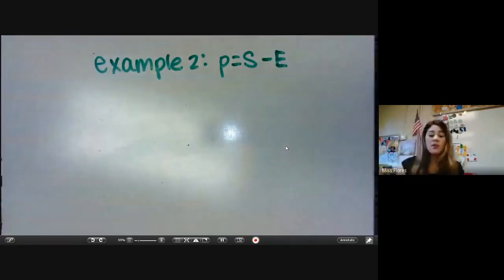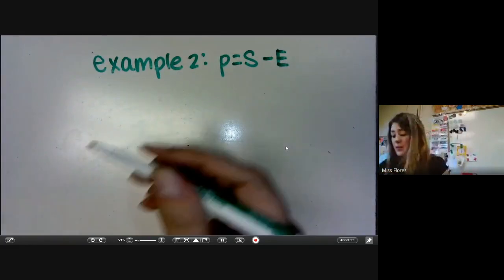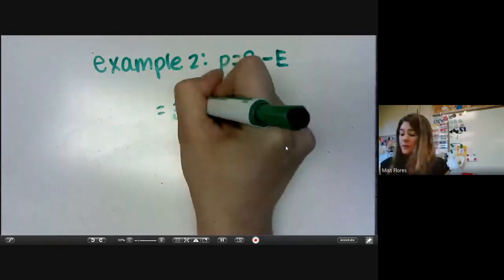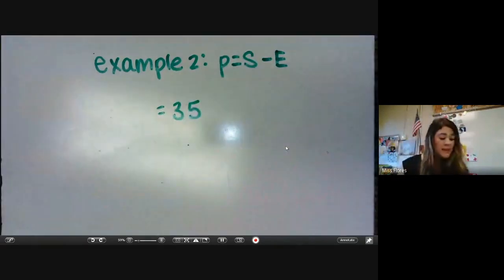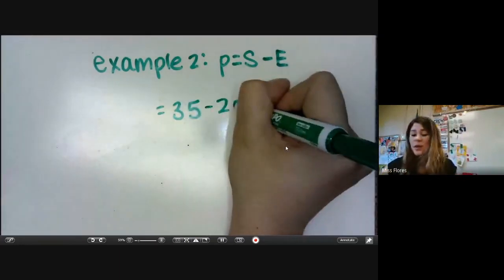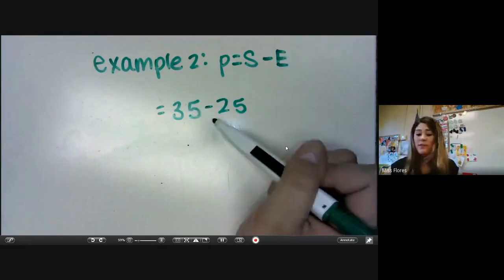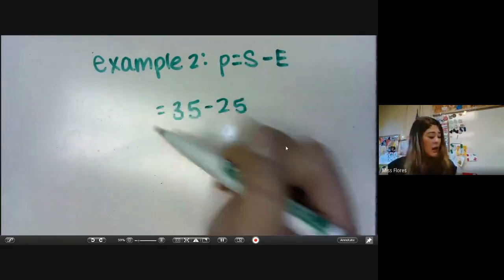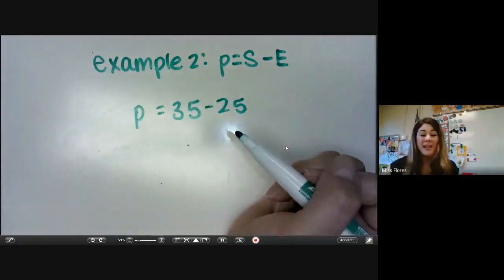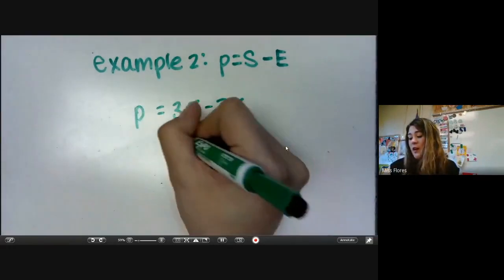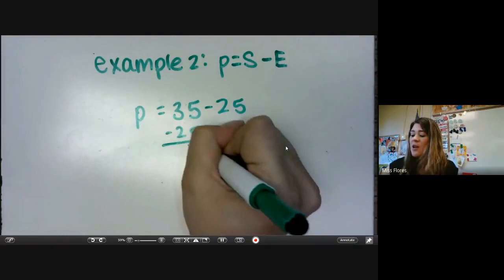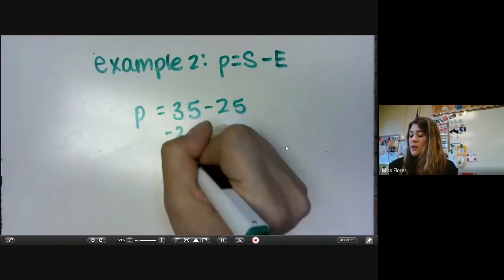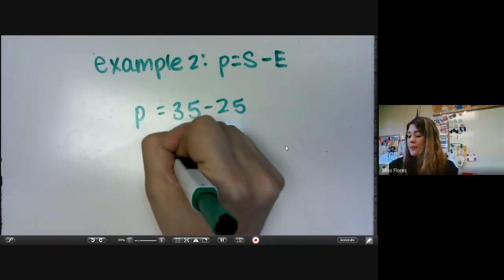So the equation is profit equals sales minus expenses, meaning sales is how many she sold, which it tells us she sold for $35. Then it says the expenses. That's how much she spent, and it says she spent $25. So we would subtract $25 from $35, and then we would get our profit. How much she made. So 35 minus 25, 5 minus 5 is 0, 3 minus 2 is 1. So she actually made $10.